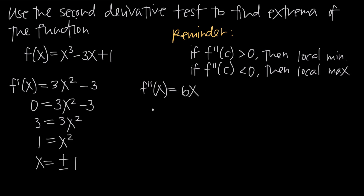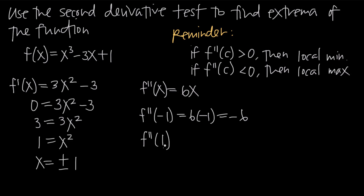Now we plug in each critical point. Evaluating f double prime of negative 1 gives 6 times negative 1, which is negative 6. Evaluating f double prime of positive 1 gives 6 times positive 1, which is 6. So at x equals negative 1 we get negative 6, which is less than zero, and at x equals positive 1 we get positive 6, which is greater than zero.